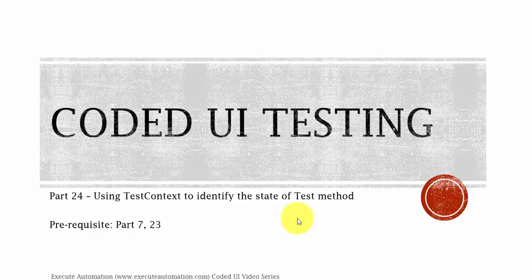Hey, hello guys, this is Karthik from xgirautomation.com and this is part 24 of our Coded UI video series. In this part we're going to start working with the TestContext to identify the state of a test method which you are executing. Before watching this part, I would request you to watch part 7 and part 23 since this part is going to have some dependency from those parts.